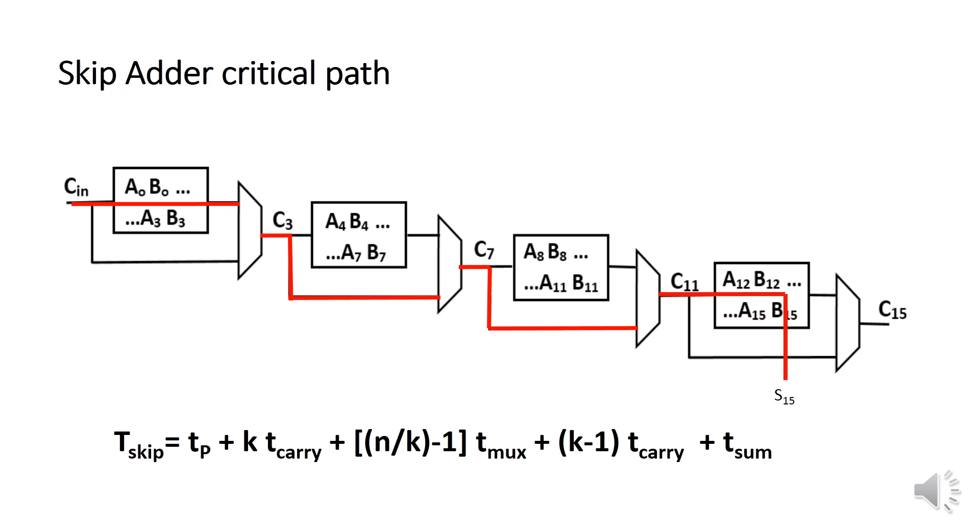Let's look now at the critical path. By definition, the critical path is the longest path, the one that takes more time to output the result. This longest path occurs when we have a non-propagate condition P equal to 0 in the first two bits A0, B0 of the first block. So we have to wait for the carry delay of all the first block.